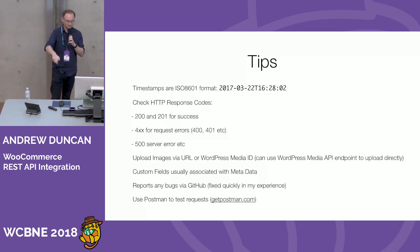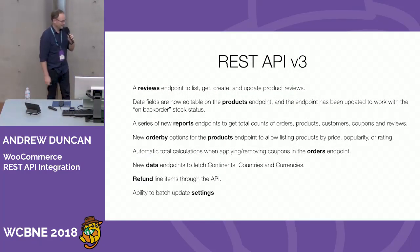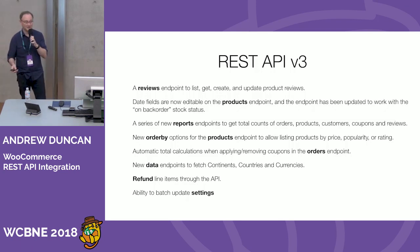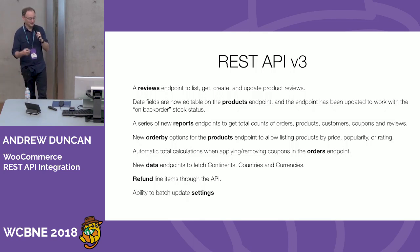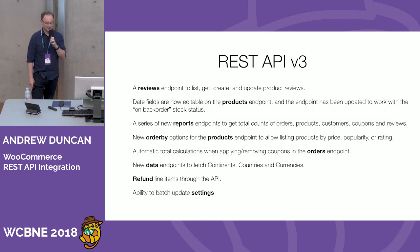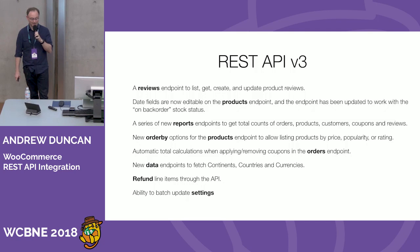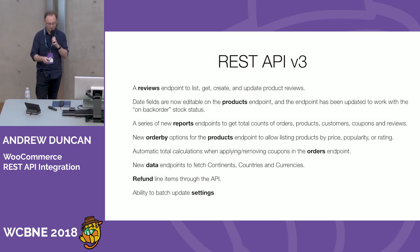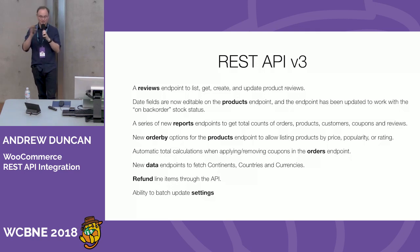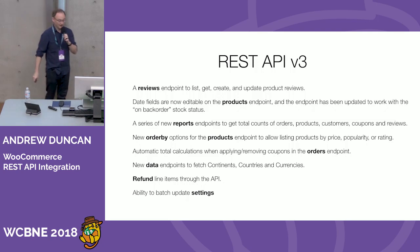The new features in WooCommerce API version 3, released a couple of days ago, include a reviews endpoint, a reports endpoint, a new data endpoint, the ability to refund line items through the API — a popular request over the years — and the ability to edit date fields on the products endpoint that previously weren't editable. The API documentation will tell you if a field is read-only.